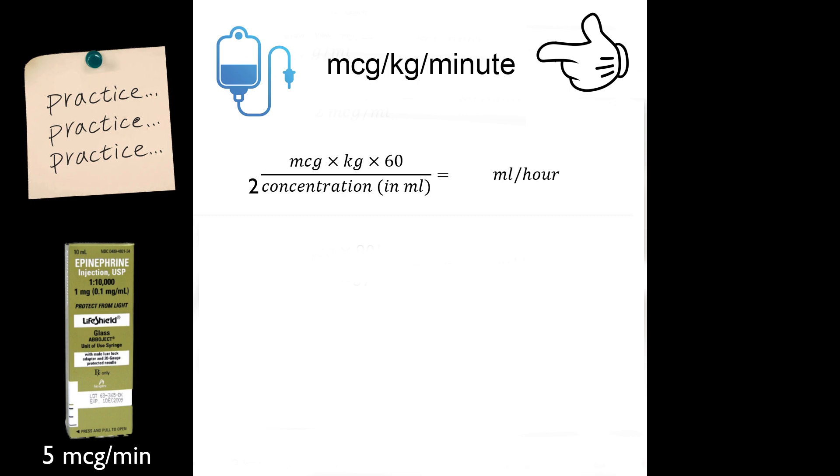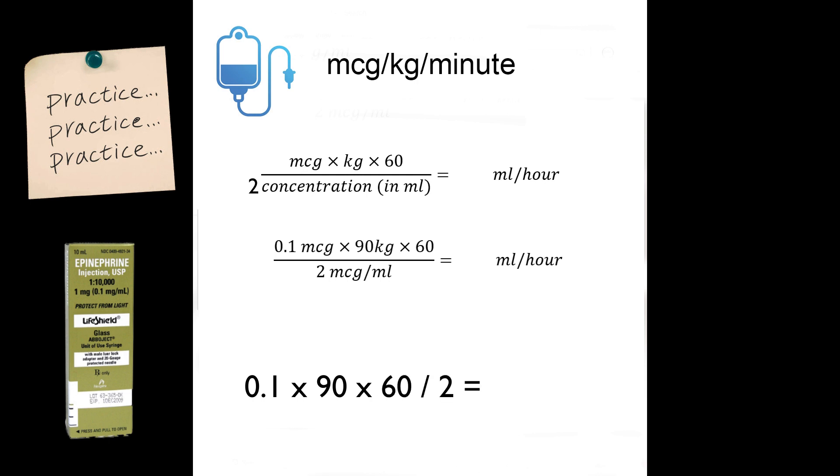The only thing that's different is instead of micrograms, you're changing your dosing to probably something like 0.1 microgram per kilogram. If this hypothetical patient weighs 90 kilograms, then it's 0.1 times 90. 60 times 0.1 times 90 times 60 divided by 2 gets you your final answer of 270 milliliters per hour.